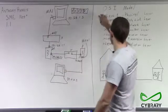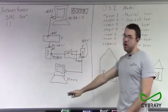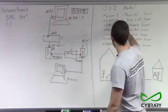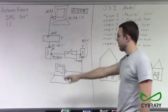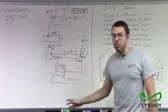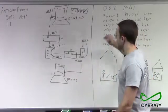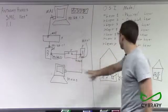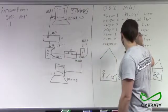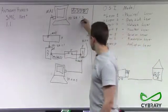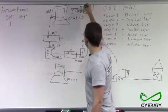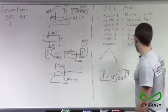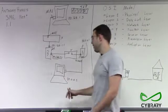So we have layer one, our physical layer, going on throughout the whole process. We have layer two, our data link layer with MAC addresses, going on throughout. Layer three, our network layer with IP addresses and routers. Layer four, our transport layer with TCP. And next we have layer five, our session layer.